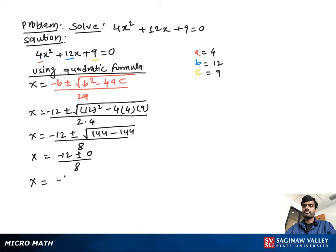Then, x equal to negative 12 over 8, and if we divide 12 and 8 both by 4, we get x equal to negative 3 over 2. That is our final answer.